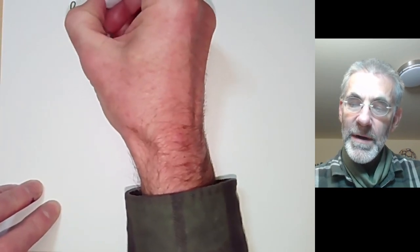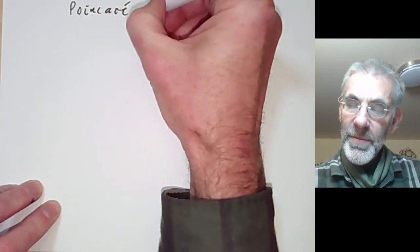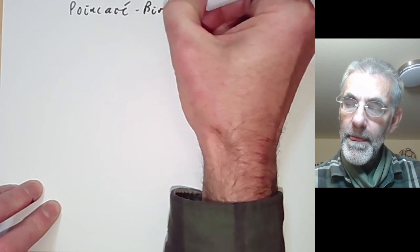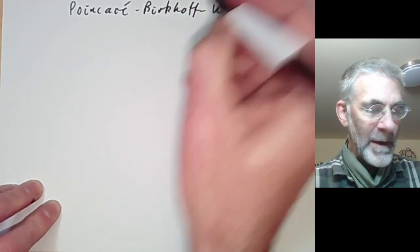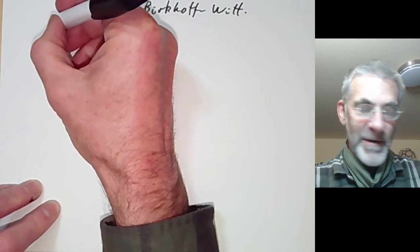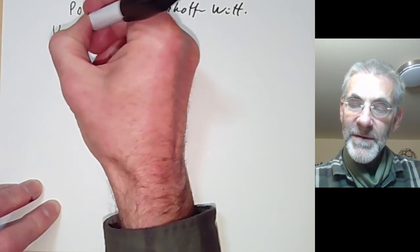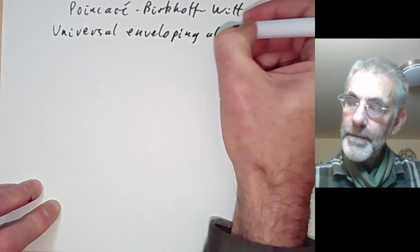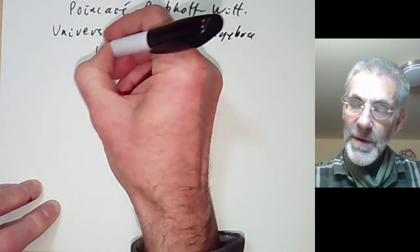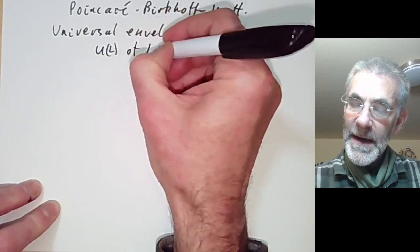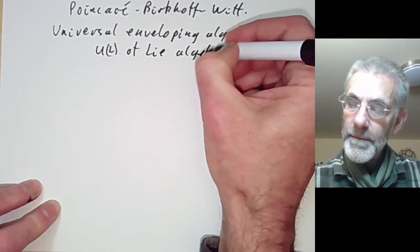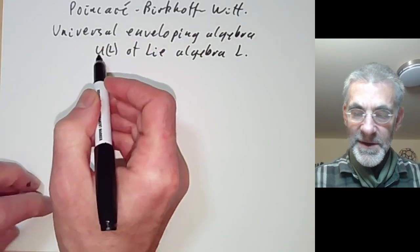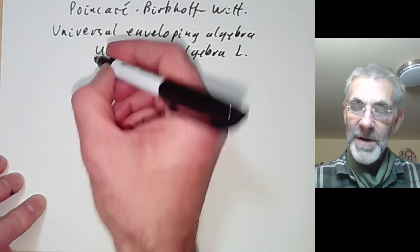This lecture is part of a graduate course on Lie groups and will be about the Poincaré-Birkhoff-Witt Theorem. The theorem tells you about the structure of the universal enveloping algebra U(L) of a Lie algebra L. I'd better start by saying what the universal enveloping algebra is.